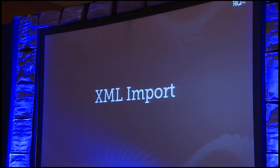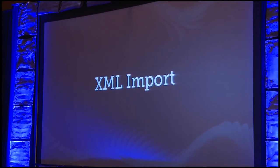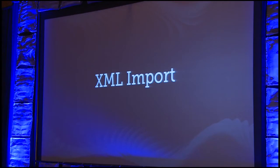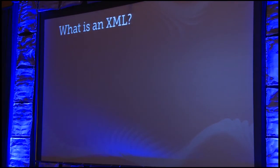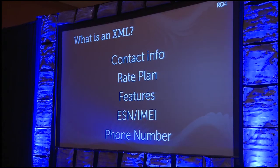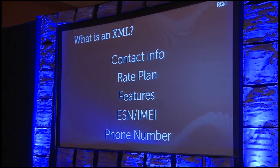The XML import is something new. We've always had XML import where we could read the XML and bring it in. Today it will create the customer for you, start the sale, and populate the ESN and phone number. An XML is provided by certain carriers only, and it's a file that gives you the customer's contact information — first name, last name, address, phone number — the specific rate plan they got through the carrier's activation site, any features, the IMEI that was activated, and the phone number that was activated.